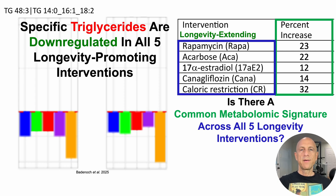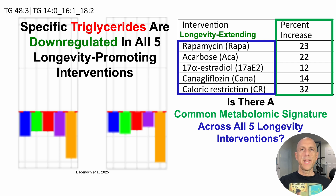On the left, we've got levels of triglyceride 48-3, so that's 48 carbons and three double bonds. Triglycerides contain three fatty acids. For TG-48-3, it includes the triglyceride 14-0, which is myristic acid or myristate, 16-1, which is palmitoleic acid, and 18-2, which is linoleic acid.